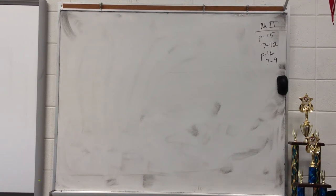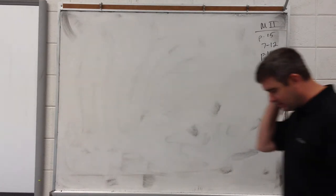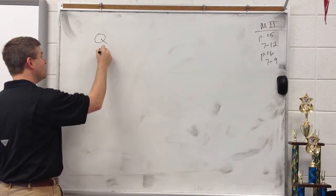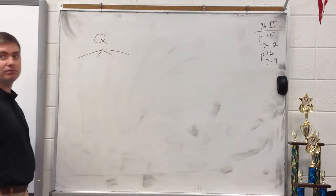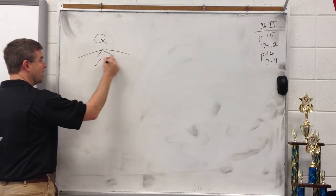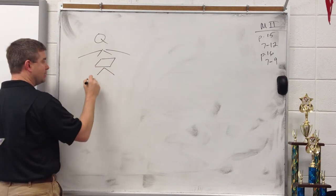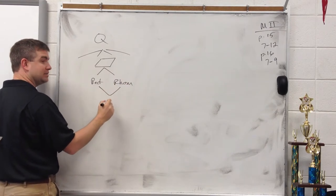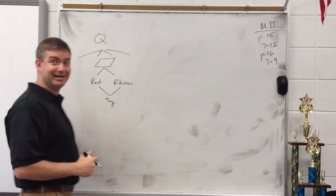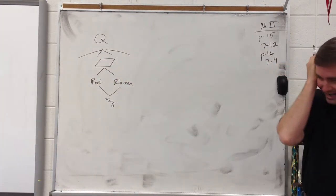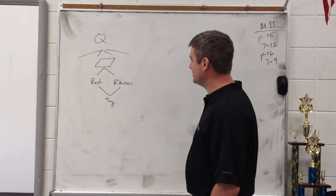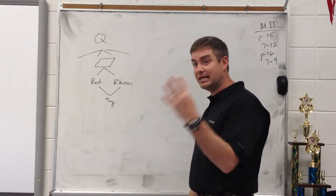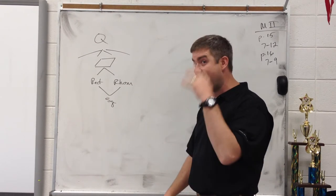This is sections 5.11 and 5.12 in Math 1. We're talking about traps and kites, which are the last two quadrilaterals. Everything we've talked about so far has been a quadrilateral. We talked about parallelograms, and underneath parallelograms you've got rectangles and rhombuses. And then a rectangle and a rhombus is called a square. What's another property of every quadrilateral?